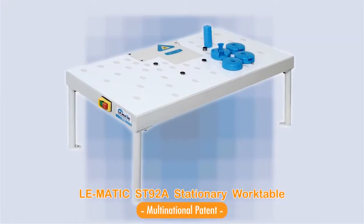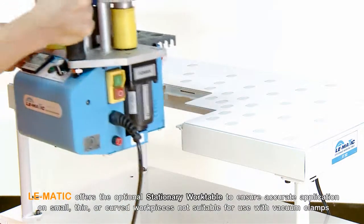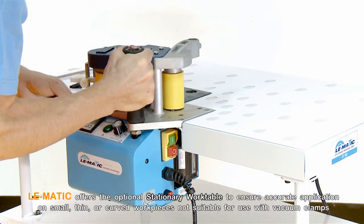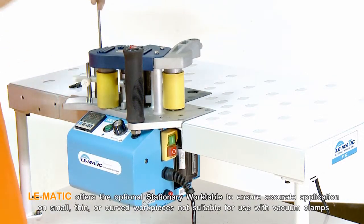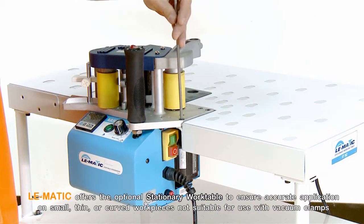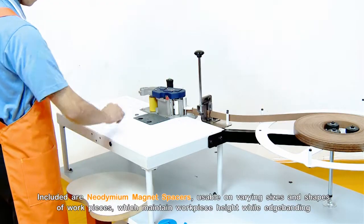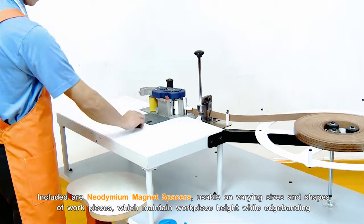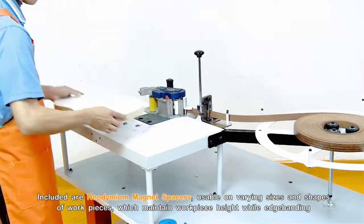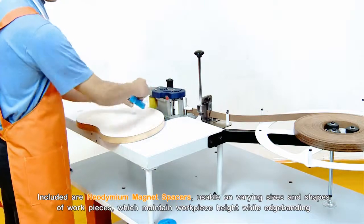The Lomatic ST-92A Stationary Work Table. Lomatic offers the optional stationary work table to ensure accurate application on small, thin, or curved workpieces not suitable for use with vacuum clamps. Included are neodymium magnet spacers, usable on varying sizes and shapes of workpieces, which maintain workpiece height while edge banded.